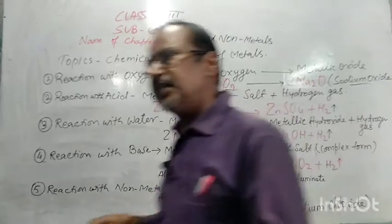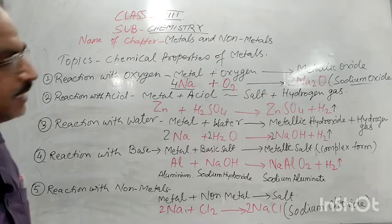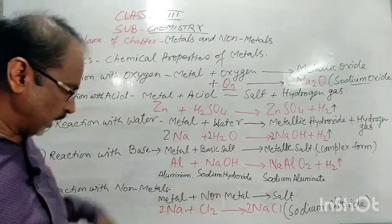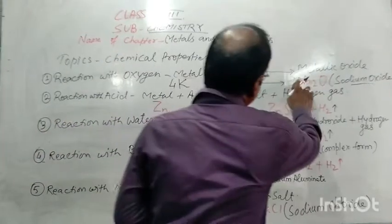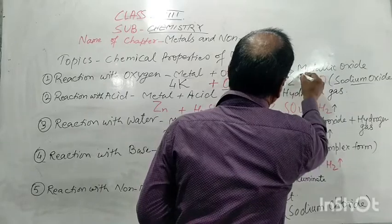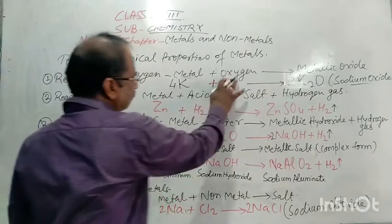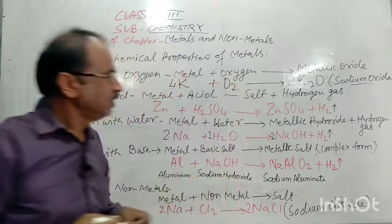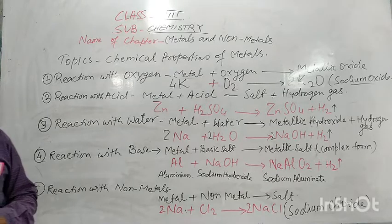Na₂O is the product and it is known as sodium oxide. We can see the reaction with sodium oxide. On the left of sodium, we do potassium plus oxygen to form potassium oxide. So if you have any metal reacting with oxygen, it will produce a metallic oxide.